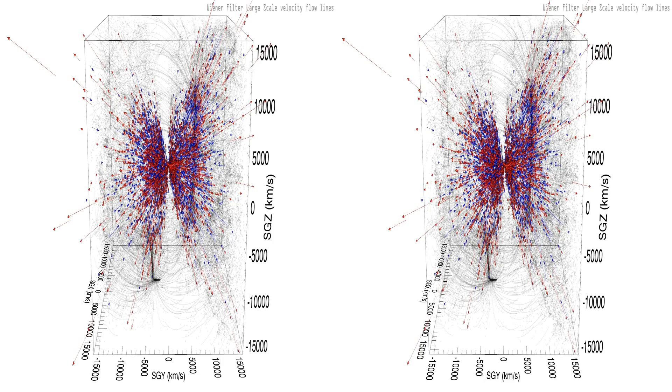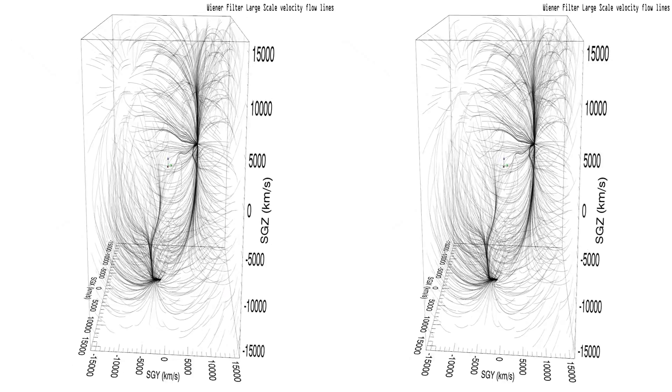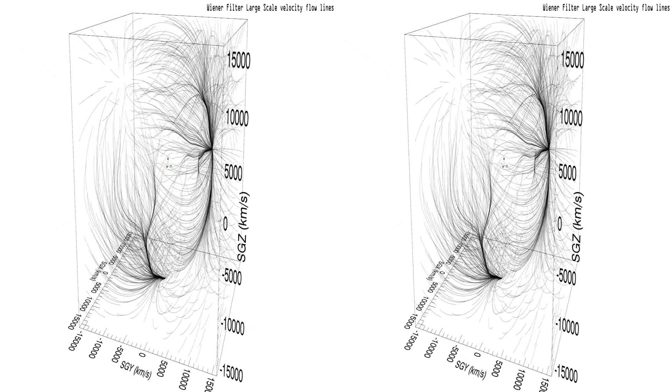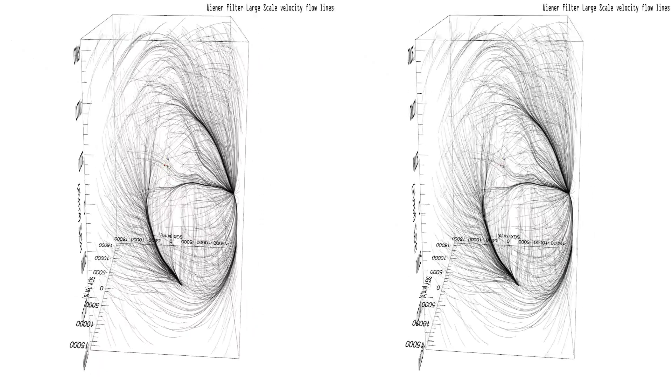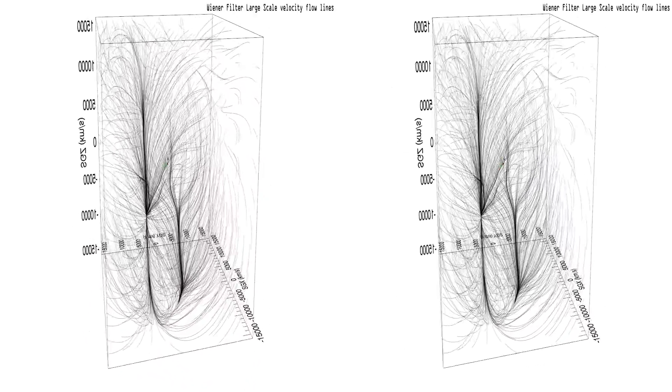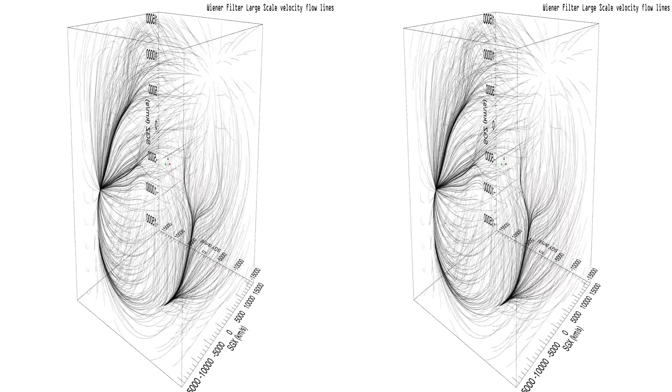The scene now transitions to peculiar velocity flow lines derived from a Wiener filter analysis of the Cosmic flows two peculiar velocity field. Our galaxy is located at the origin indicated by the three central colored directional vectors.